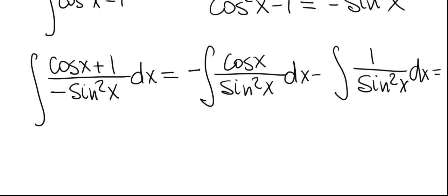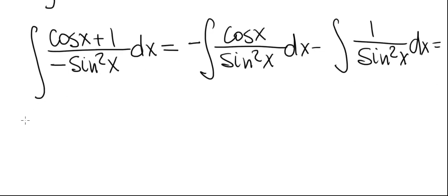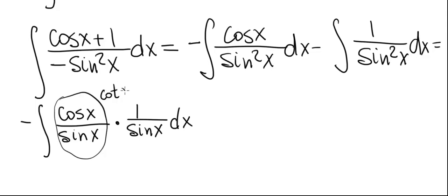Next, we're almost done. All we have to do is take a look at the first integral carefully. I'm going to rewrite it like this: cosine x divided by sine x times 1 divided by sine x. So it's the same thing as cosine over sine squared but in this form we see that this is cotangent of x and 1 over sine is cosecant of x.